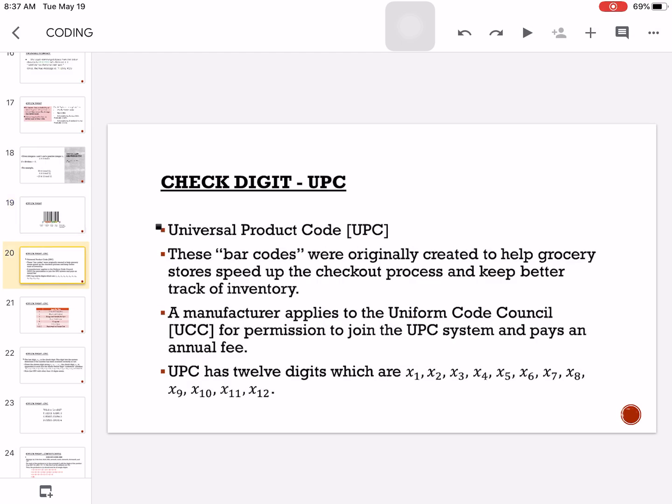We have here UPC has 12 digits which are x₁, x₂, x₃, x₄, and so on. Those subscripts would be the positions of the x's or the numbers that we have in the UPC.